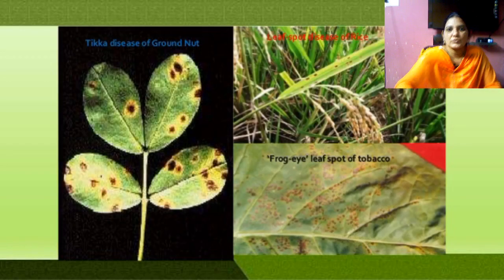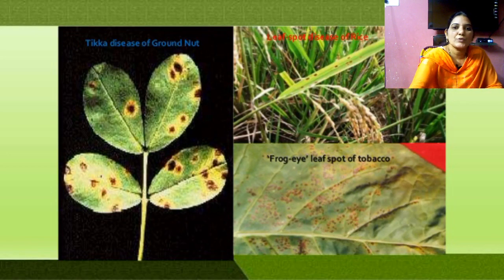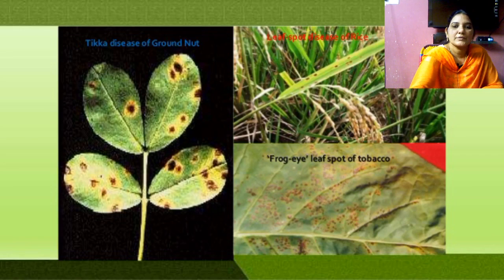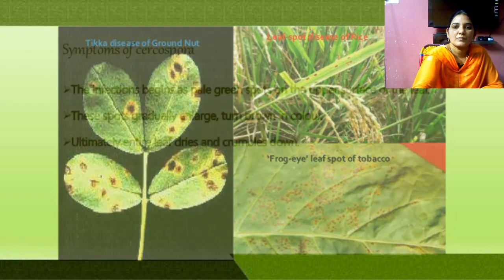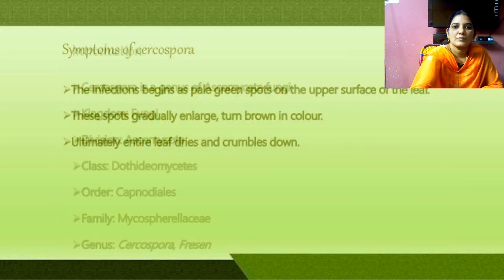We can see the clear diagram here. Brown spots are present on the leaf.